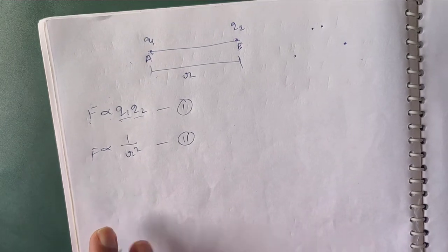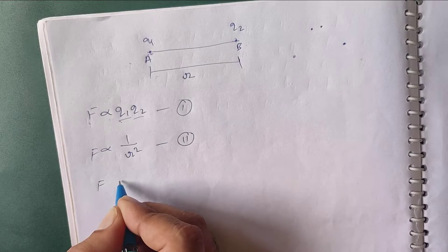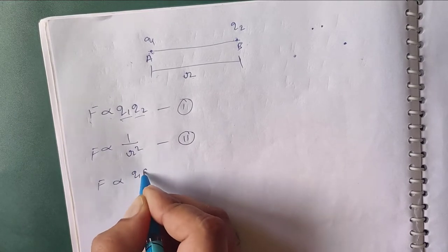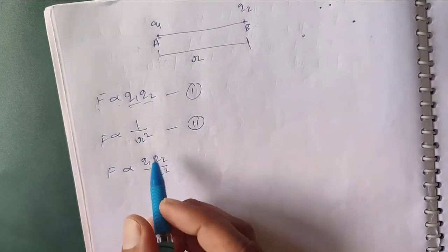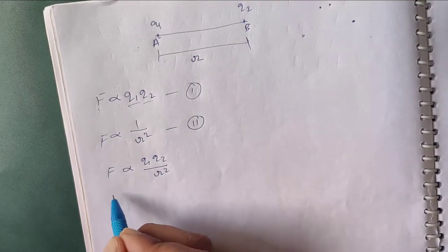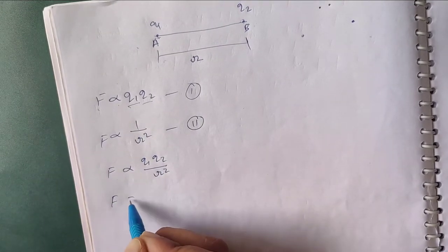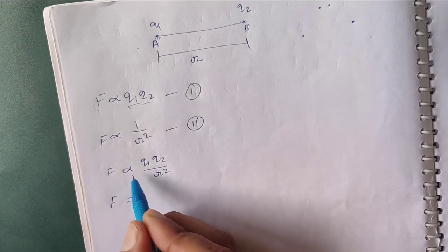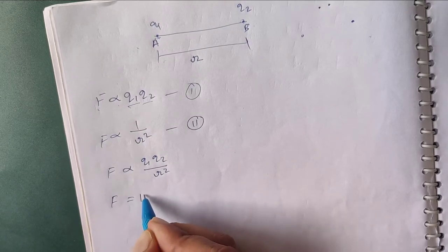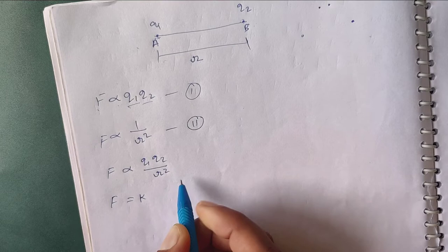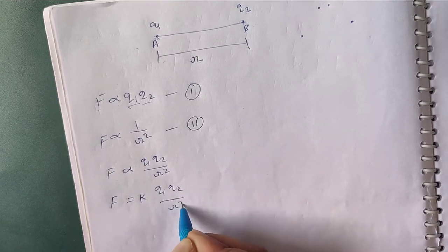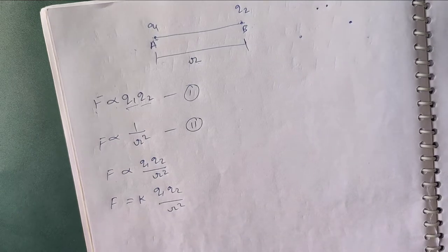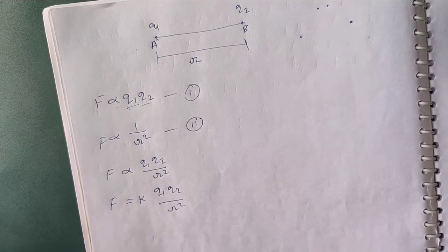Combining these two equations, we get force proportional to Q1×Q2 over R square. Removing the proportionality sign, we write K — Coulomb's constant — so F = K × Q1×Q2 / R square. Here K is the constant of proportionality.